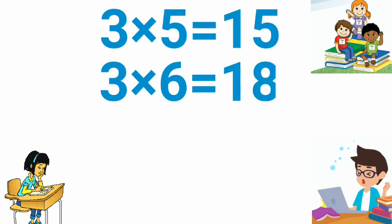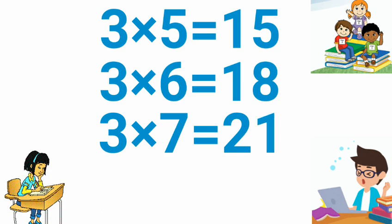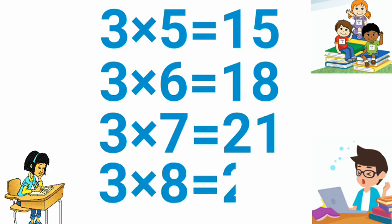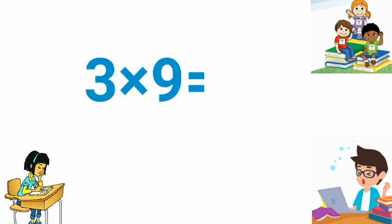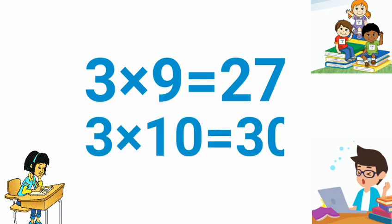3 6 is 18, 3 7 is 21, 3 8 is 24, 3 9 is 27, 3 10 is 30.